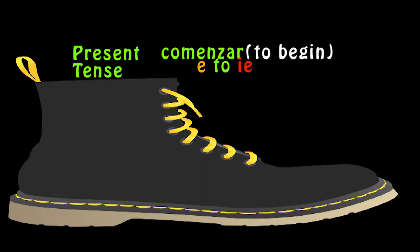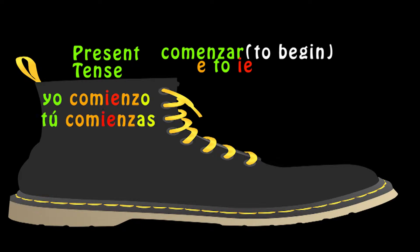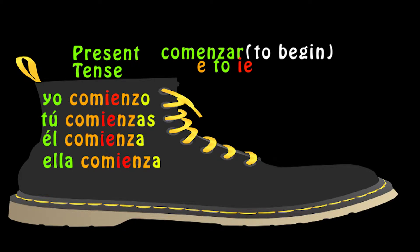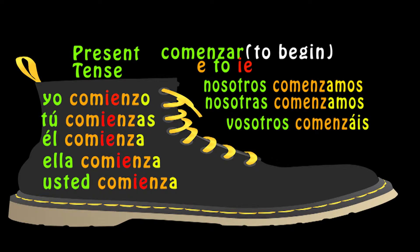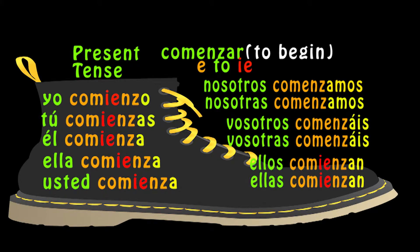A verb like almorzar is comenzar — to begin. Same change from E to IE in the present tense. Yo comienzo. Tú comienzas. Él comienza. Ella comienza. Usted comienza. Nosotros comenzamos. Nosotras comenzamos. Vosotros comenzáis. Vosotras comenzáis. Ellos comienzan. Ellas comienzan. Ustedes comienzan. Do you notice? It is a stem-changing verb. No stem change on the preterite.